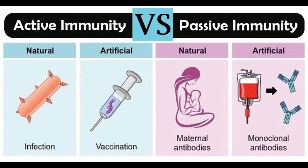Difference 5 — Artificial acquirement: Active immunity is conferred artificially by means of vaccines. Passive immunity is conferred artificially by administration of preformed antibodies. Difference 6 — Immunity type: Active immunity involves both humoral and cell-mediated immunity, while passive immunity is conferred only by preformed antibodies. Difference 7 — Components: Active immunity involves T cells, cytotoxic T cells, helper T cells...